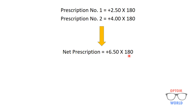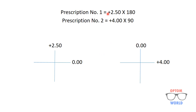Now consider cylinders with the same sign but opposite axis: prescription number one is plus two point five at 180, and prescription number two is plus four at 90. In this case we will draw an optical cross for both prescriptions. Plus two point five at 180 means the 180 meridian has zero power. For prescription number two, plus four at 90 means the 90 axis has no power and the 180 axis has plus four power. We will add these two optical crosses.